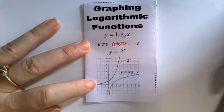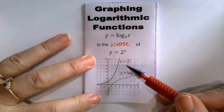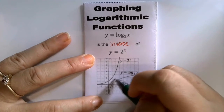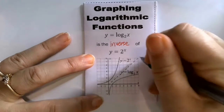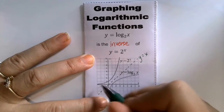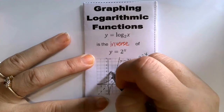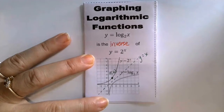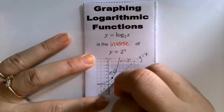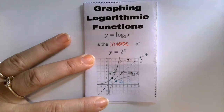In the lab, we learned that log base 2 of x is the inverse of the exponential function y equals 2 to the x. Recall that inverse functions are a reflection over the diagonal line y equals x. So any point on the exponential function y equals 2 to the x — for example, the anchor point (1, 2) — if we reflect that over the line y equals x, then on the inverse the corresponding point switches the x and y coordinates and becomes (2, 1).